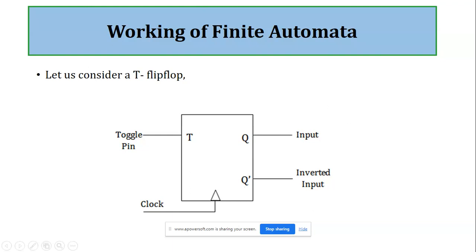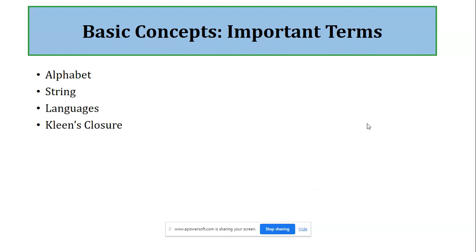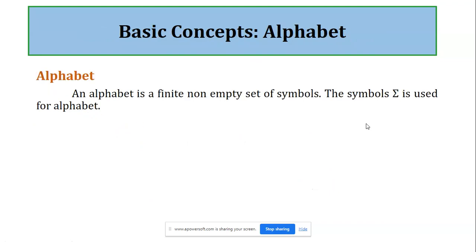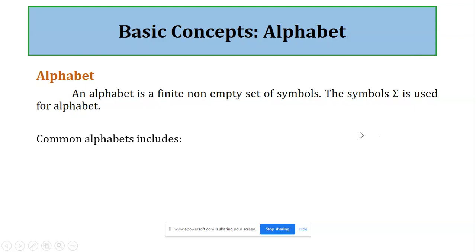Moving forward, the basic concepts related to finite automata that we should know are: what is the meaning of alphabet, string, language, and closures. The first important term is alphabet. An alphabet is a finite non-empty set of symbols, and its representation is done using the sigma (Σ) symbol. Conventionally, sigma is used to denote alphabets.